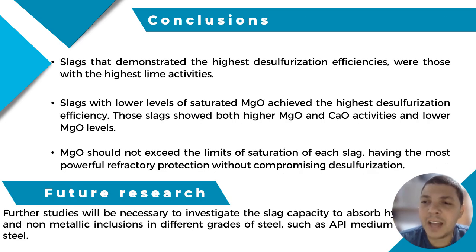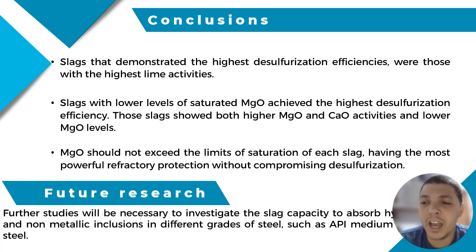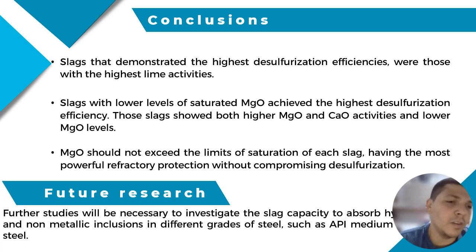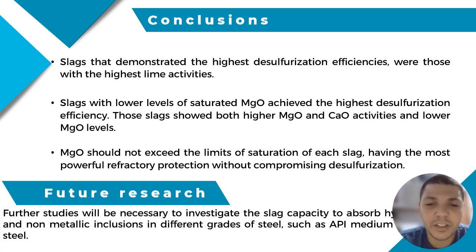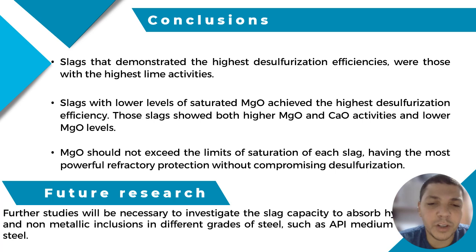We concluded that slags demonstrating the highest desulfurization efficiencies were those with the highest lime activities. Slags with lower levels of saturated MgO achieve the highest desulfurization efficiencies, showing both higher MgO and lime activities alongside lower MgO levels. MgO should not exceed the saturation limits of each slag, providing the most effective refractory protection without compromising desulfurization. For future research, further studies will investigate the slag capacities to absorb hydrogen and non-metallic inclusions in different grades of steel, such as API medium carbon steel.